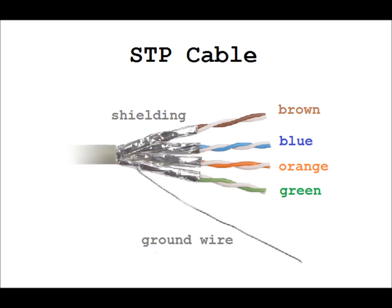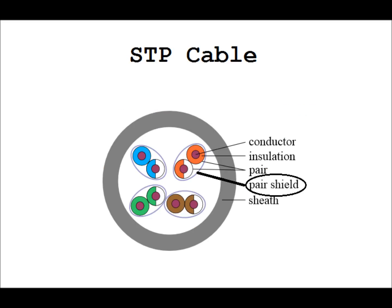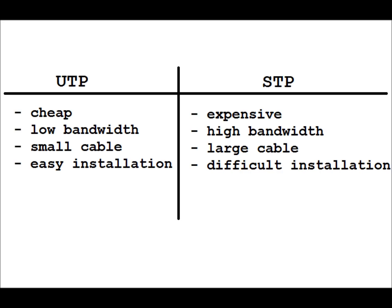The STP has the same color wires as UTP: brown, blue, orange, and green. In this picture you can clearly see the shielding and the ground wire. The ground wire is sometimes referred to as the drain wire — it helps facilitate quick and reliable termination of EMI that is already in the cable. The STP has the same inner workings as the UTP, but this diagram shows the shield around every twisted pair of wires.